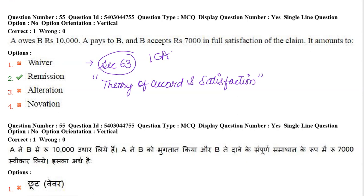Next: A owes B rupees 10,000. A pays to B, and B accepts rupees 7,000 in full satisfaction of the claim. This amounts to — and the answer relates to section 63 of the Indian Contract Act.